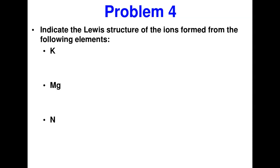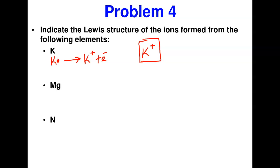Now let's practice: indicate the Lewis structure of ions formed from the following elements. For potassium (group 1A): the Lewis structure has one dot; it loses that one electron to become K⁺. The Lewis structure of the K⁺ ion is simply K⁺ with no dots. For magnesium (group 2A): the Lewis structure has two dots; it loses both electrons to form Mg²⁺.